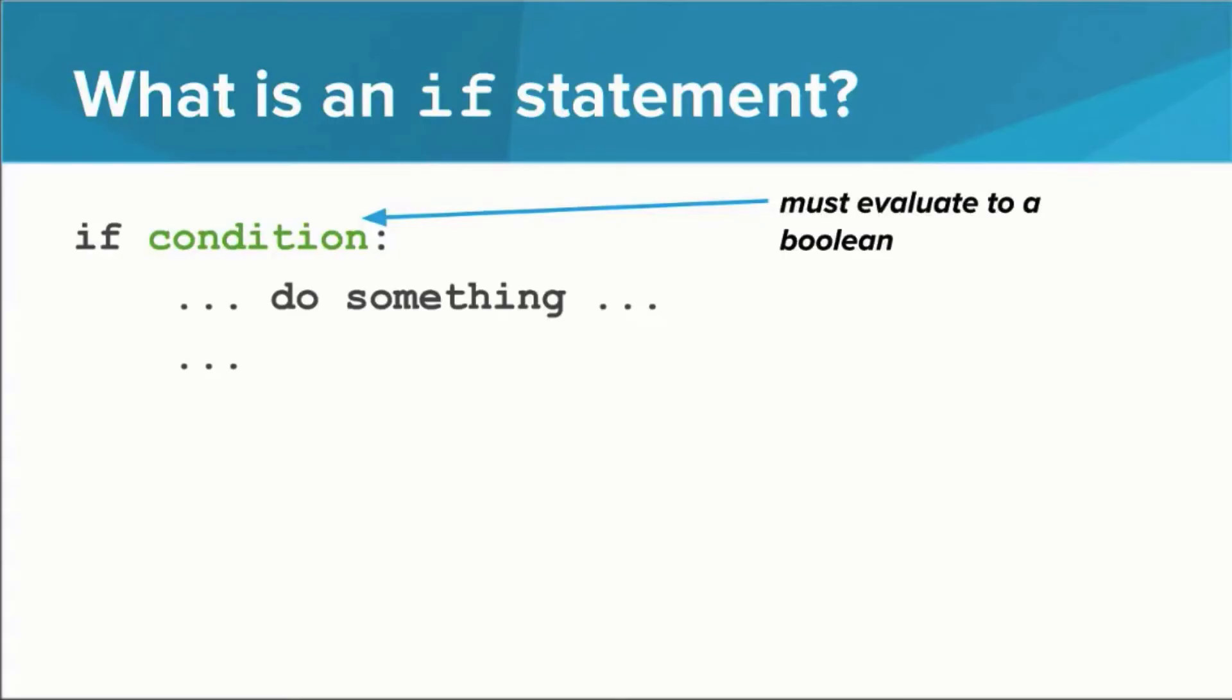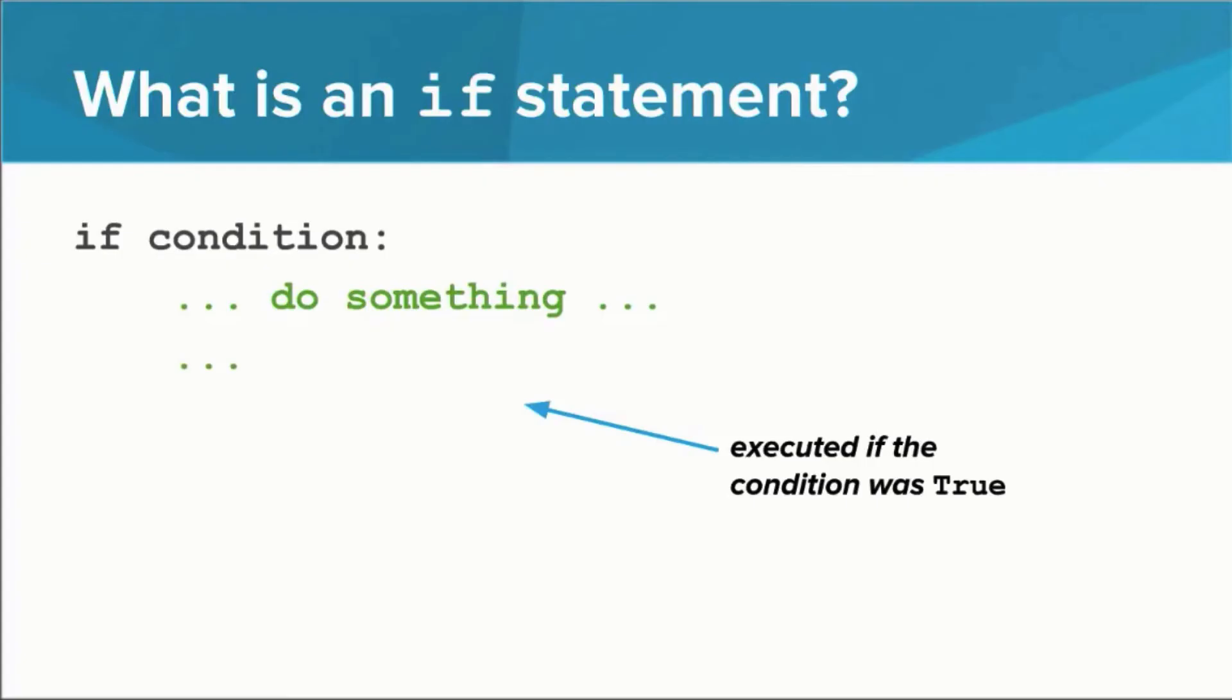This part of the statement, the condition, must be something that evaluates to a Boolean. If the condition evaluates to true, the Python interpreter will execute whatever is inside the if statement. This is the code that gets executed if the condition was true. This is called the body of the if statement. Everything in the body of the if statement must be indented by one level.